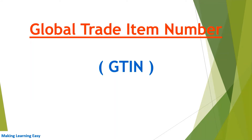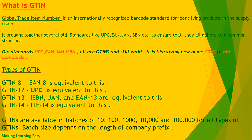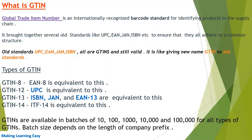Hello everyone, welcome to the session. In this session we will discuss about Global Trade Item Number, GTIN. What is GTIN? GTIN, Global Trade Item Number, is an internationally recognized barcode system for identifying products in the supply chain.